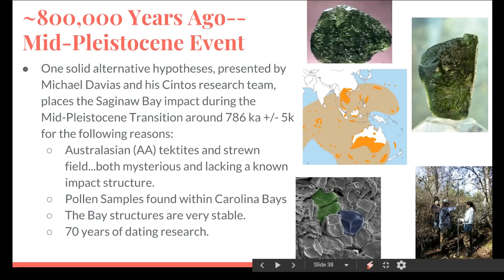So if we can all agree that this event was a result of a major ice age impact event in the area we now call the Saginaw Bay — and not gradual wind and water erosion over a long period of time — then we can move on. One alternative hypothesis that has caught my attention was proposed by Michael Davies and his CentOS independent research team. They have suggested that the impact event must have occurred around 786,000 years ago, and the main reasoning behind this hypothesis is the 70 years of dating research we just discussed, and another geologic mystery: the AA tektites and the strewn field.